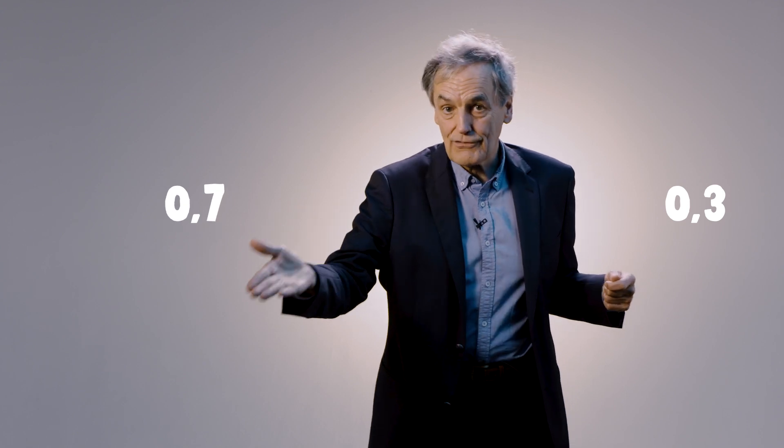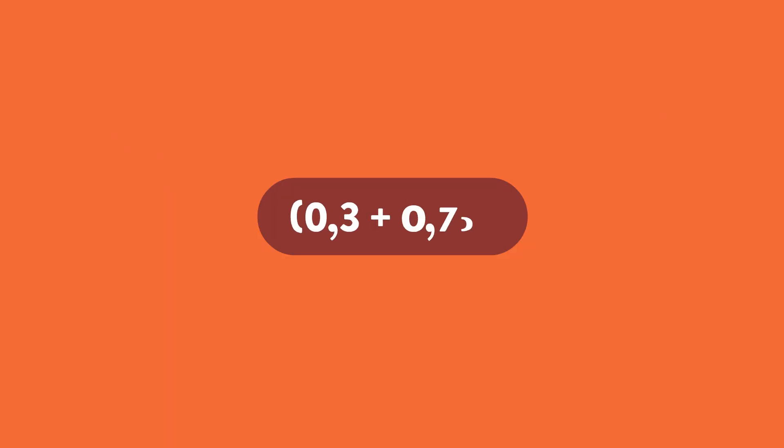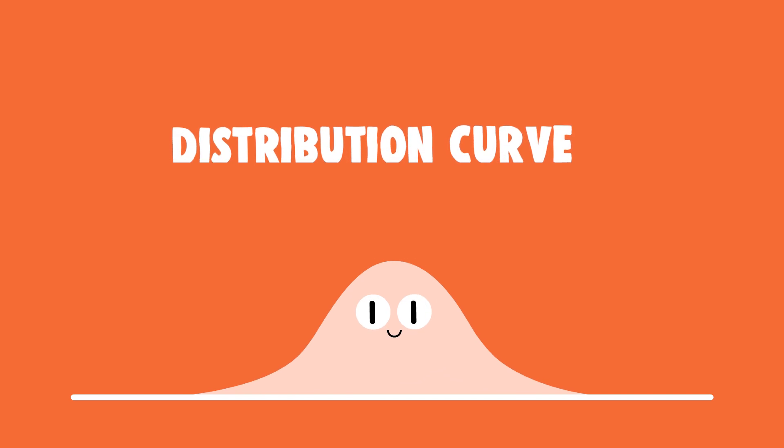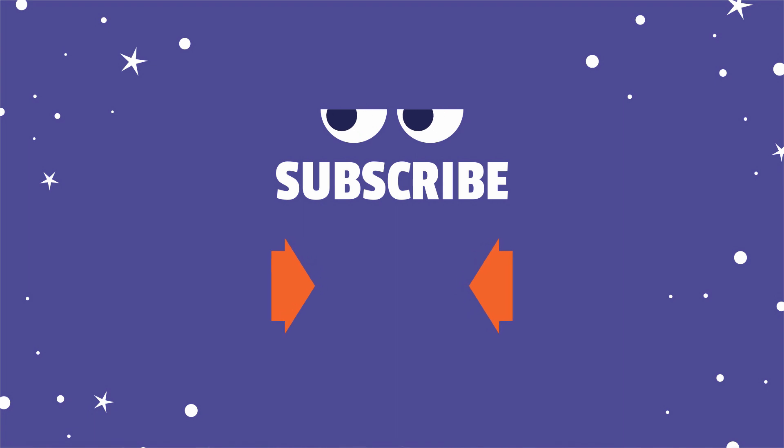Why? Because imagine an experiment with two outcomes: three chances out of ten to get one result, seven chances out of ten to get the other. The sum of the probabilities must be one — three-tenths plus seven-tenths equals one. Now take those two numbers and put them in Newton's formula: three-tenths plus seven-tenths to the nth power equals one to the nth power, which is always one. That's how you can easily connect Newton's work to the science of probability and distribution curves. Did you know it's faster to travel a cycloid than a straight line? Find out more in the next episode of our series. Subscribe now and follow the History of Maths on the YouTube channel What Makes It Tick.